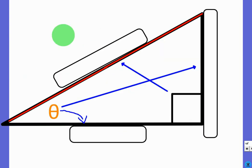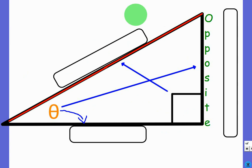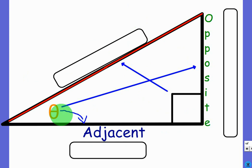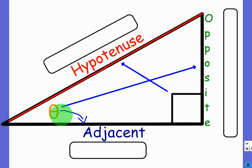Let's try to label the parts of this triangle. What would this side be? Opposite. Okay, that's correct. What would this side be? Correct. And this side would be hypotenuse.